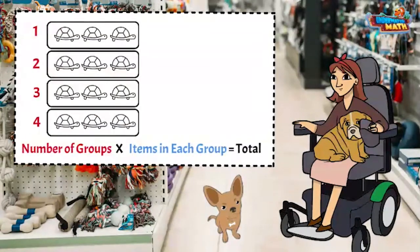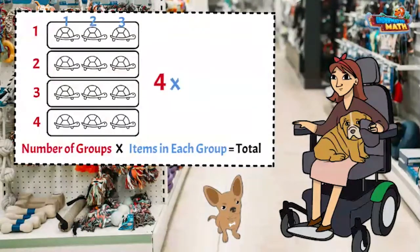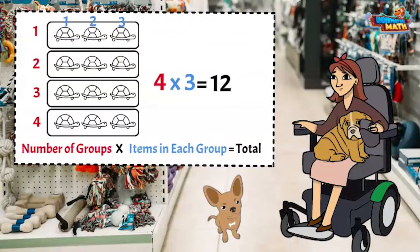Using this formula, we have one, two, three, four groups — the four is the first number in our equation. Now we will count the number of items in one group: one, two, three. We will multiply four times three to find the total number of turtles. We count all the turtles to find four times three equals twelve. Our model shows four groups times three in each group equals twelve.